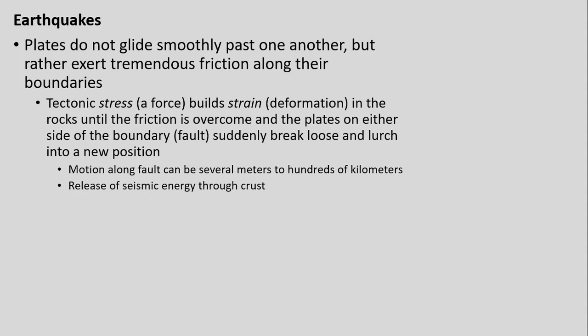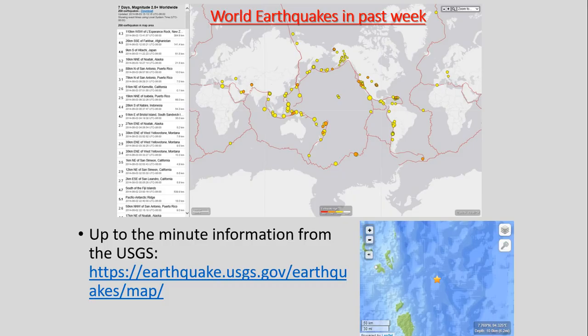That motion along a fault can be anywhere from several meters at its smallest extent to possibly hundreds of kilometers, and the amount of energy released across that whole fault. The general rule of thumb is that the larger the motion along a fault — the longer that distance of motion propagates across — the greater the amount of energy released and the larger the earthquake. The U.S. Geological Survey measures in part around the world where we have earthquakes occurring.